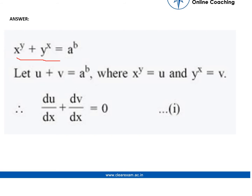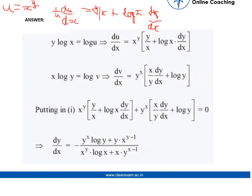The first question: x to the power y plus y to the power x is equal to a raised to the power b. We let u plus v equal to a to the power b, where x raised to the power y equals u and y to the power x equals v, so that we can differentiate using the property that du by dx plus dv by dx is equal to 0.